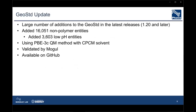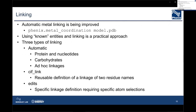The GeoStd is the restraints library shipped with Phoenix, along with a stripped-down version of the monomer library. In the latest versions of Phoenix, over 16,000 entities have been added, calculated with the QM method PBE-C3 along with a solvent model. All entities have been validated by Mogul and are available on GitHub. In addition, 3,600 low-pH entities have been added — these are the fully protonated entities as specified by the Chemical Components Library, with other entities adjusted to account for common pH levels in protein crystals.